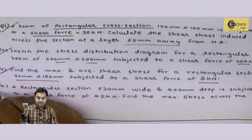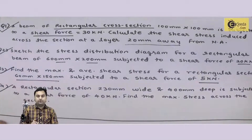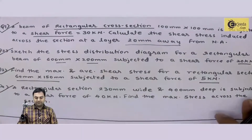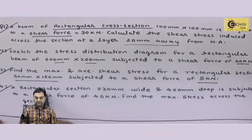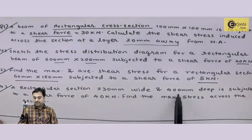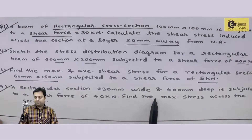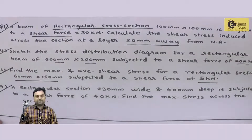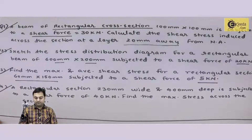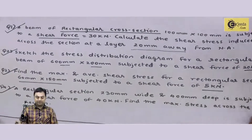Now I am marking question number four. A rectangular section 230 mm wide and 400 mm deep is subjected to a shear force of 40 kilonewton. Find the maximum shear stress across the section. Maximum stress is asked, so I'll write the data for this question.